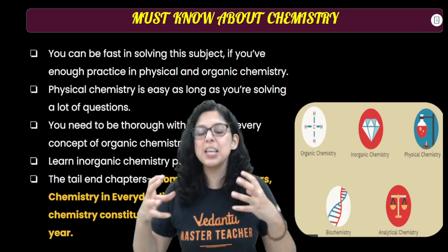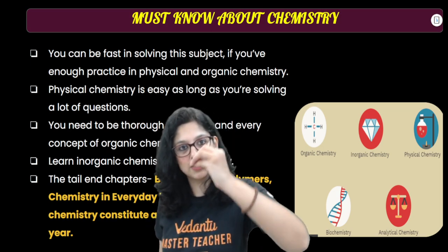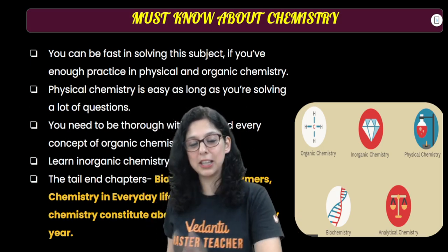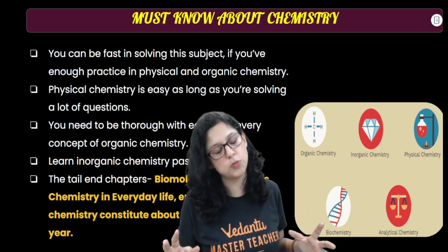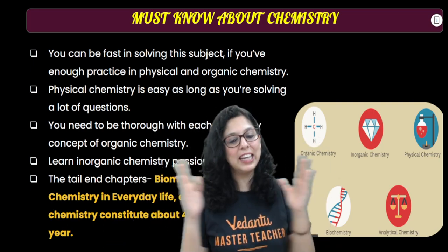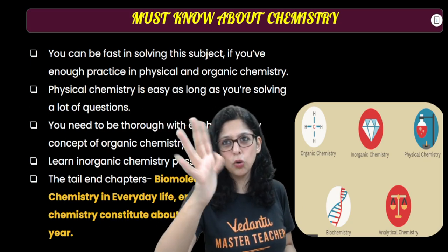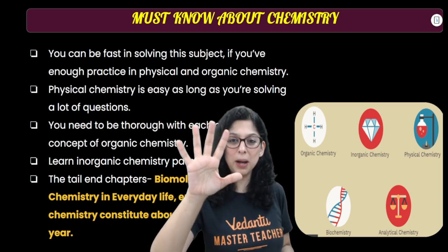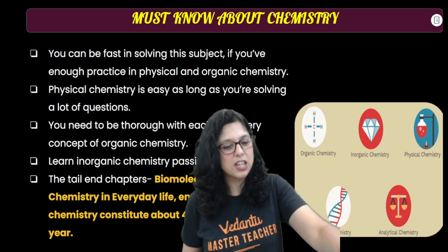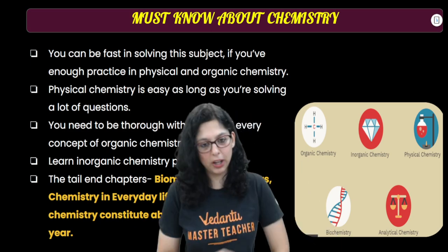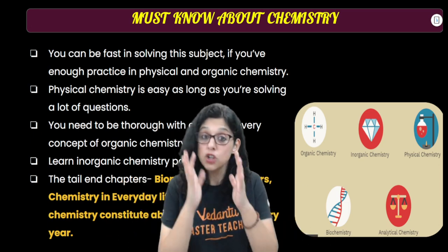For inorganic, you have to memorize sincerely and honestly. Here is a total blockbuster tip: make very crisp, short notes of every single point of NCERT. Your entire inorganic NCERT, if condensed to about 3 to 4 pages per unit, should cover all of inorganic in just 10 to 13 or 14 pages — then you are sorted. But every word must be written down.